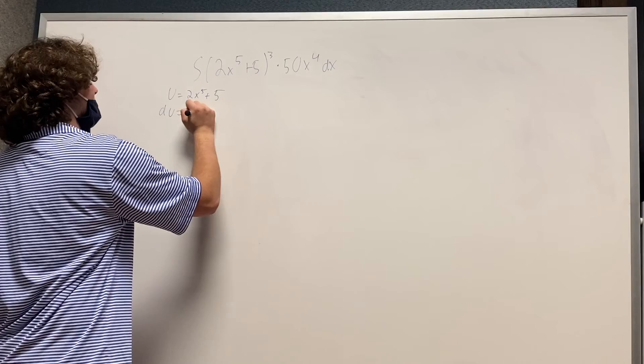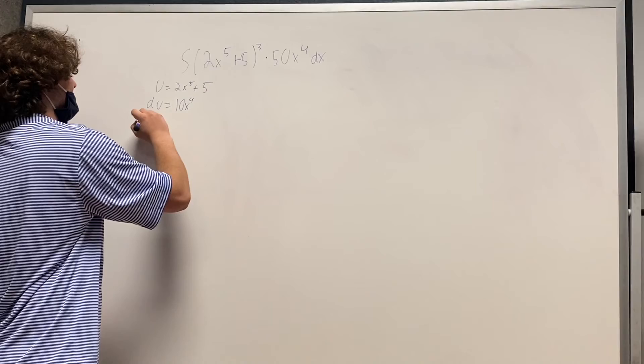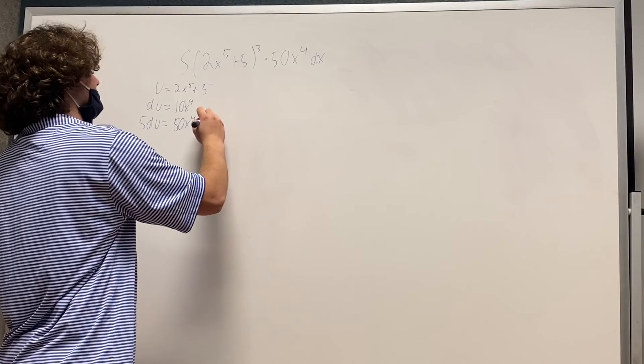And so you need five times more of that. So it will be 5du equals 50x to the 4th dx. Very good.